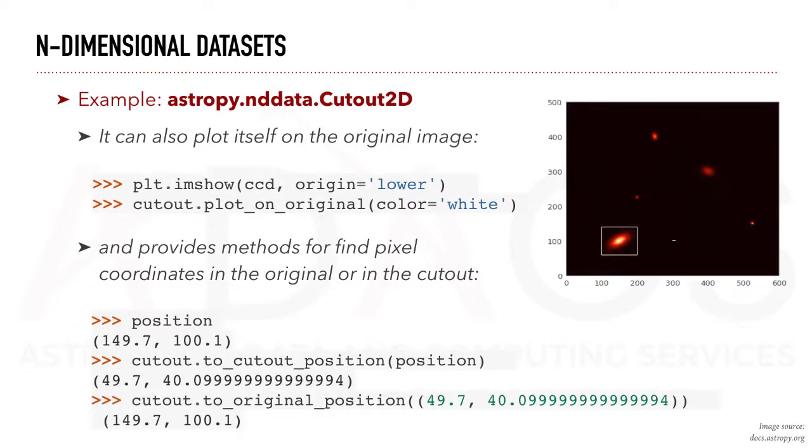Cutout2D can also be used to plot itself on the original image. This is done using the plot_on_original function. It also provides methods for finding pixel coordinates in both the original and the cutout image.